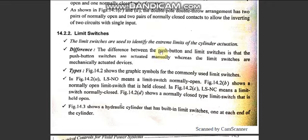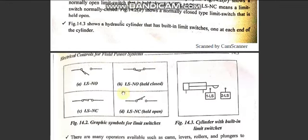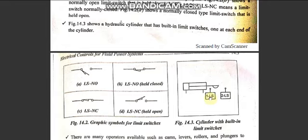The cylinder actually hits the limit switch to operate it. The symbol for limit switches is 'LS' — Limit Switch Normally Open and Limit Switch Normally Closed. When the cylinder strikes, the normally open limit switch closes; striking the normally closed switch opens the circuit. One limit switch is placed at the retraction end and another at the extension end.